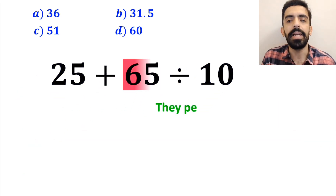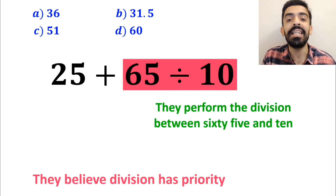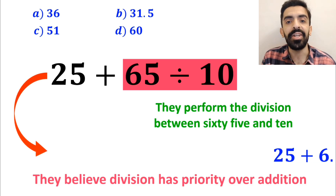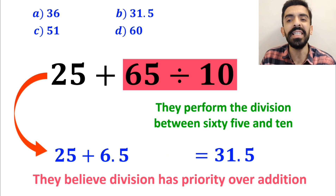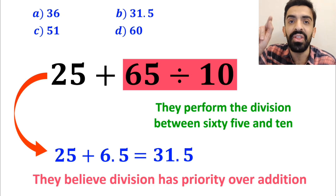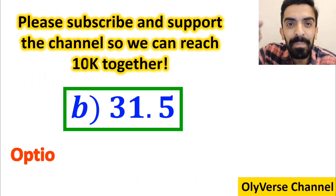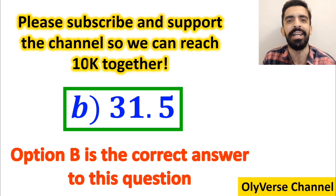Next they perform the division between 65 and 10, since they believe division has priority over addition. They write this expression as 25 plus 6.5, which ultimately gives them the answer 31.5, and they immediately conclude that option B is the correct answer.